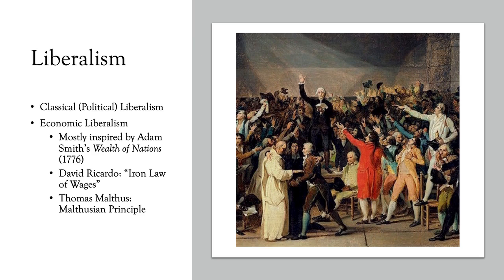We also have Thomas Malthus, famous for the Malthusian principle. Malthus basically argued that human population would always outstrip the food supply and perpetuate poverty. He believed poverty was inevitable — a natural consequence of profit. He also had a strong bias against the poor, which was very influential in a cultural bias seen throughout Western civilization. Malthus would argue that the poor deserved to be poor, that they brought it upon themselves.